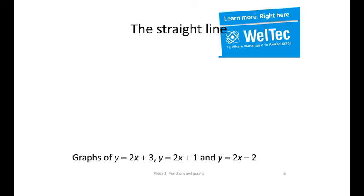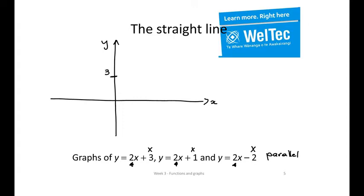Looking at these three examples, they've all got the same slope, which means they're going to be parallel. But they've got different y-intercepts. So the first one has a slope of 2 and it cuts through the y-axis at 3. The next one goes through 1 and it's parallel because it has the same slope. And the third one goes through negative 2 and it's parallel.